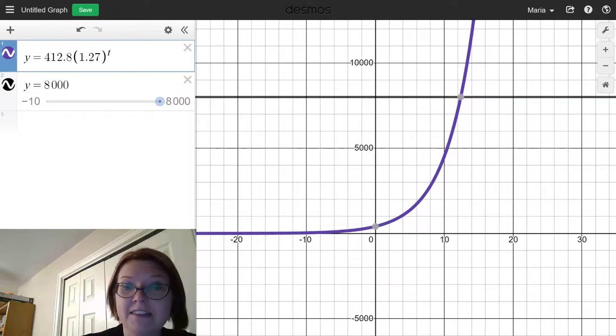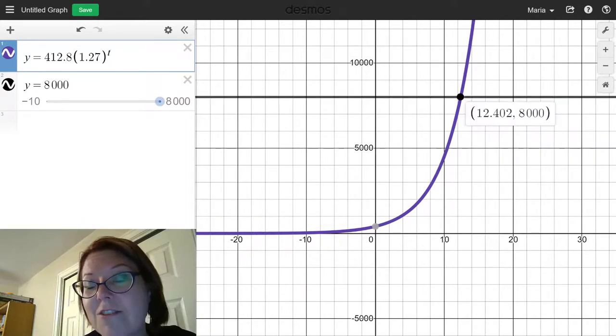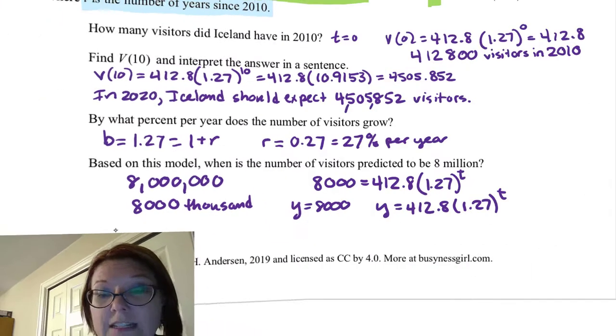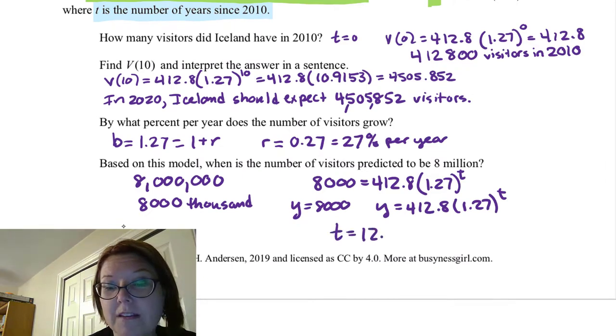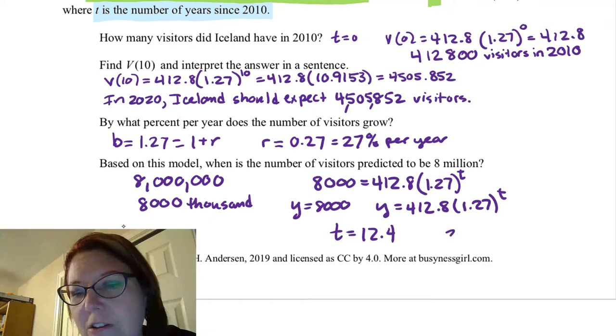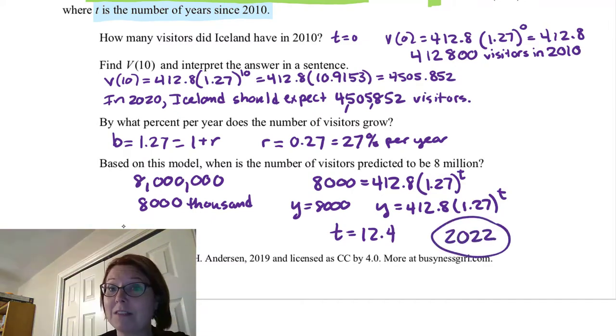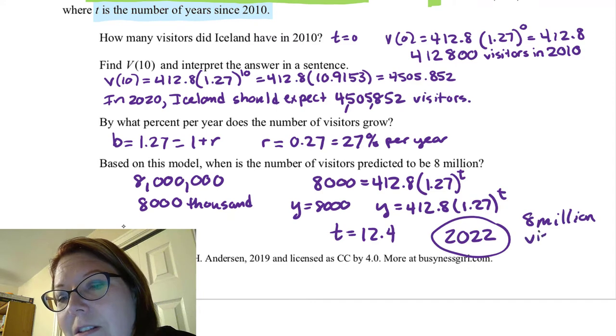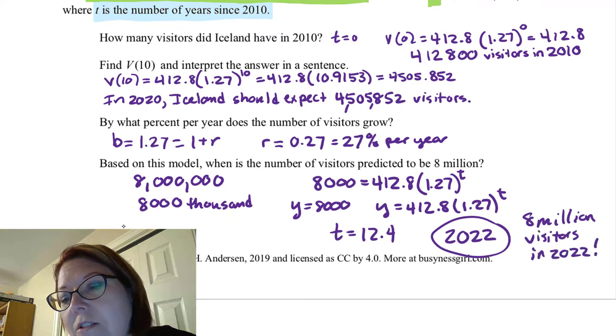I'm going to include now y = 8,000 on this graph. And I see an intersection point at (12.402, 8000). So at t = 12.4, we'll just say 12.4-ish, right? And so what year is that? When is the number of visitors predicted to be 8 million? Well, that would be 12.4 years after 2010. So that would be the year 2022. That would be the year we hit 8,000,000 visitors or 8 million visitors. Let's say 8 million visitors in 2022. Maybe that deserves an exclamation point.